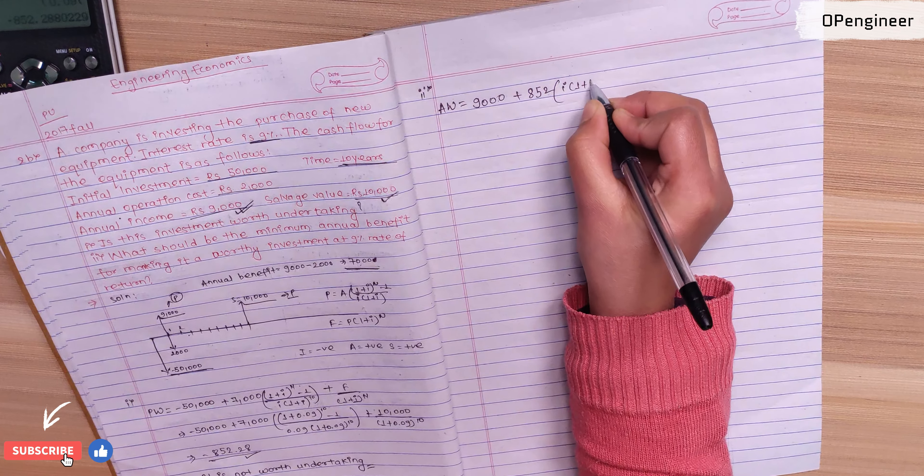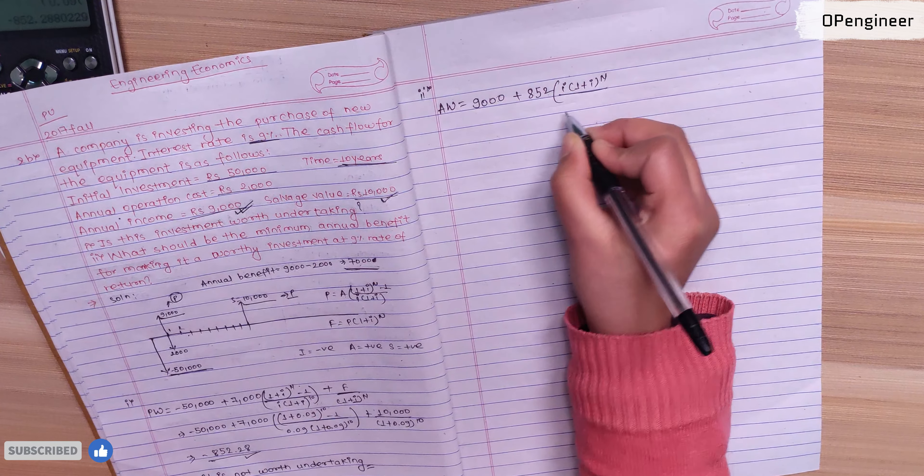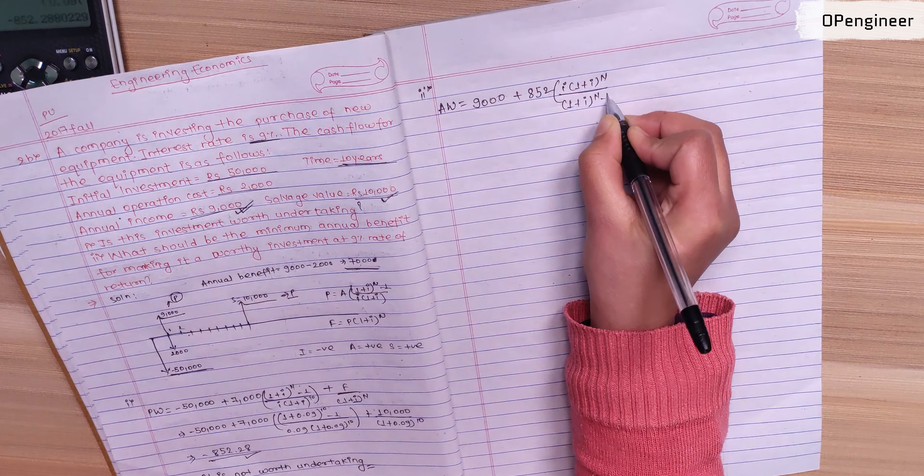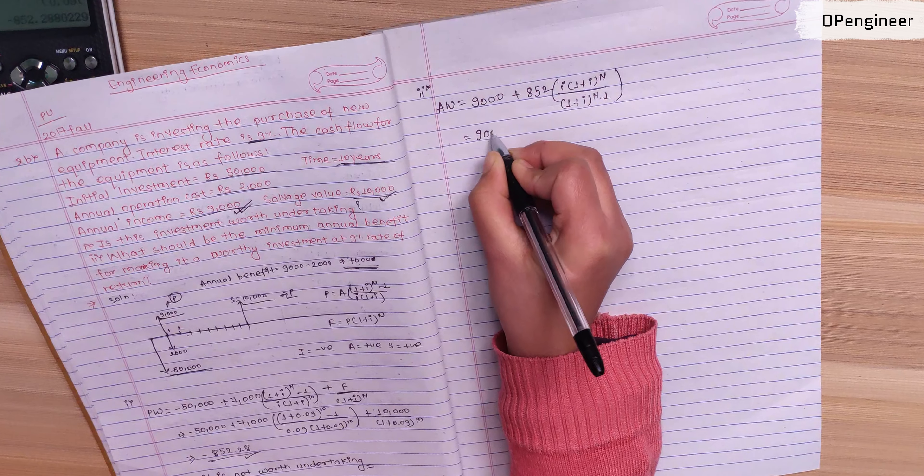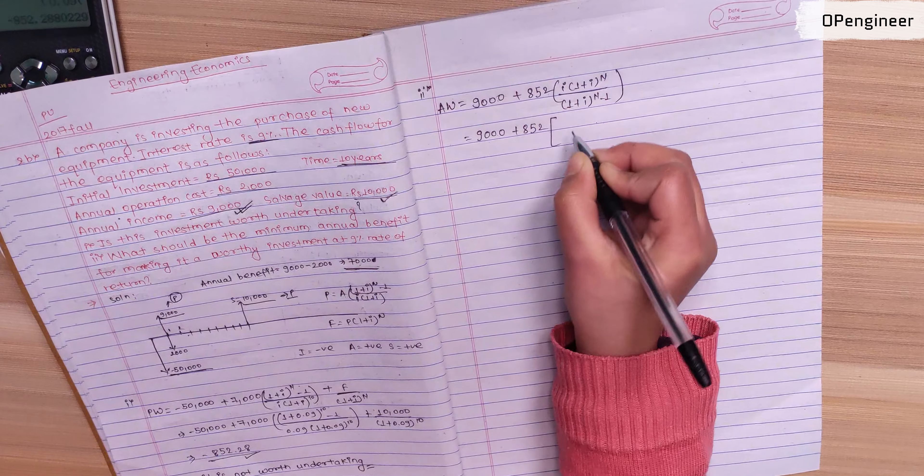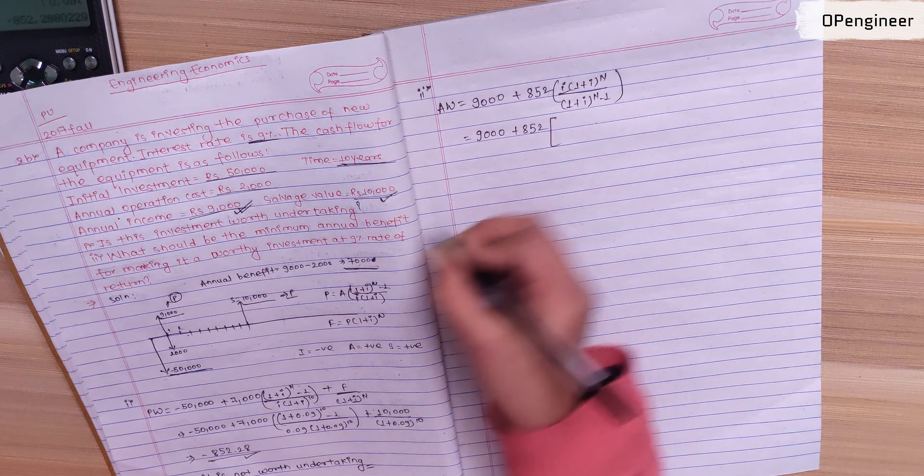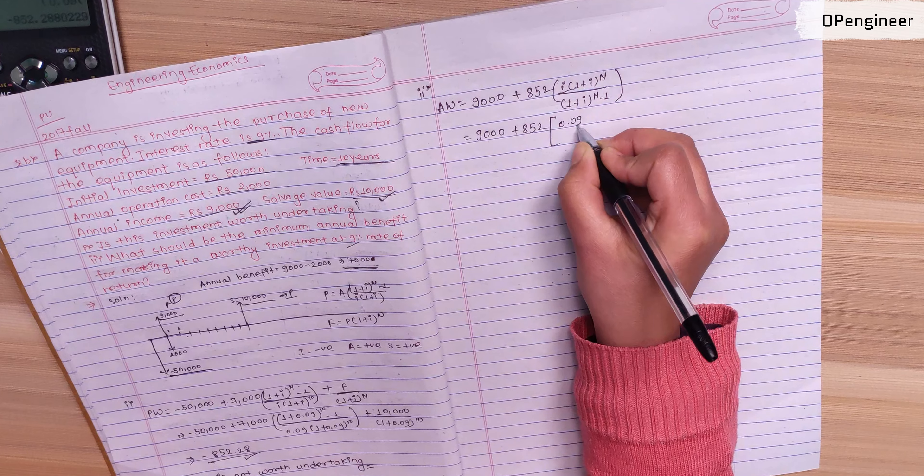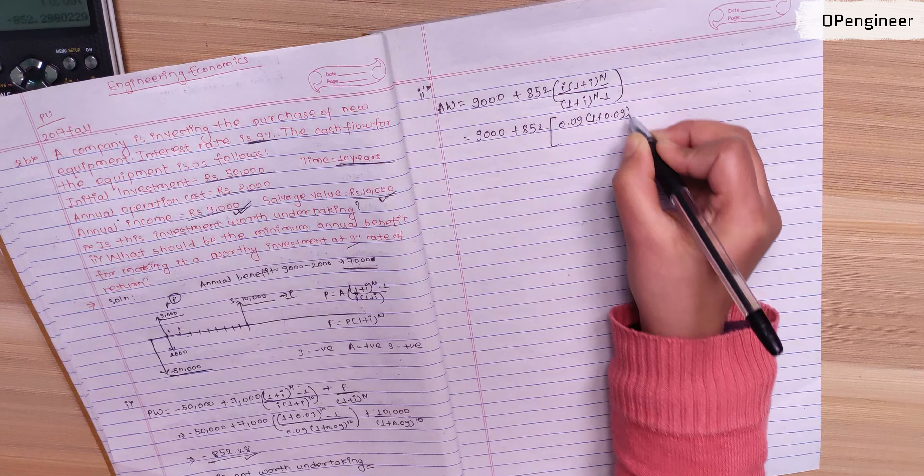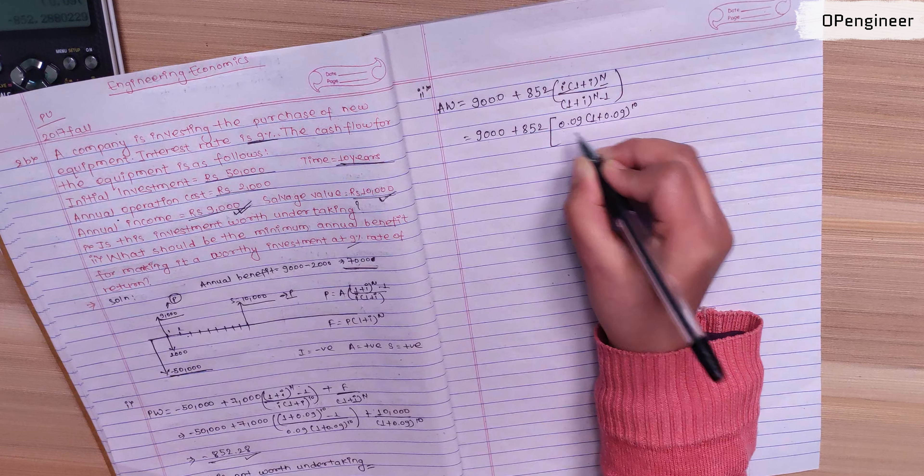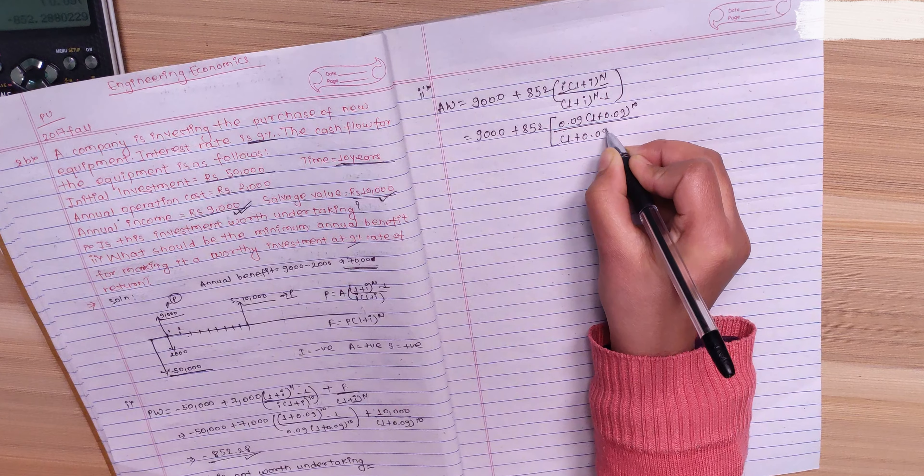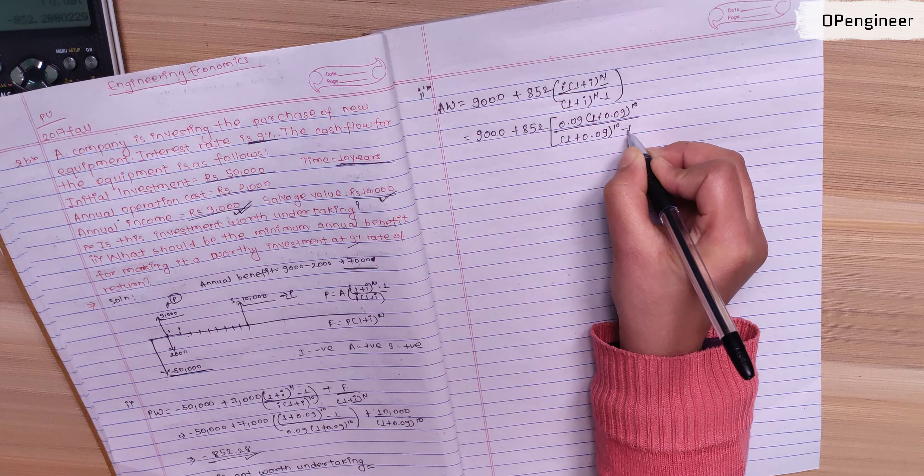The formula is: i times (1 plus i) to power n divided by (1 plus i) to power n minus 1. So 9,000 plus 852 times 0.09 times (1 plus 0.09) to power 10 divided by (1 plus 0.09) to power 10 minus 1.